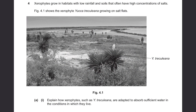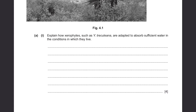Xerophytes grow in habitats with low rainfall and soils that often have high concentrations of salt. Figure 4.1 shows the xerophyte Yucca treculeana growing on salt flats. Part A: Explain why xerophytes such as Y. treculeana are adapted to absorb sufficient water in the conditions in which they live. What are the characteristics of these plants that allow them to live in places with very little or no rain and also places that are quite salty, so it's hard for the plants to absorb water from the ground by osmosis.